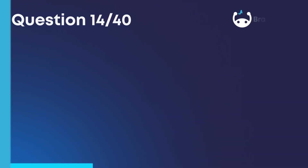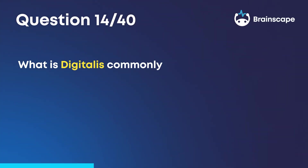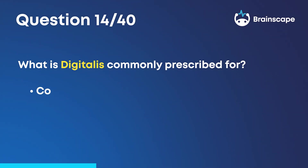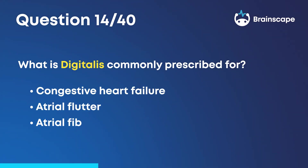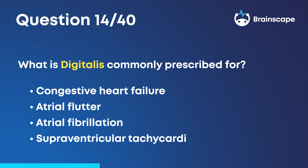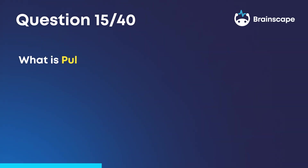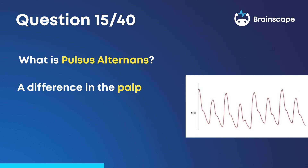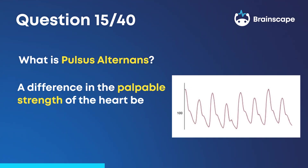Question 14: What is digitalis commonly prescribed for? Digitalis is commonly prescribed for congestive heart failure, atrial flutter, atrial fibrillation, and supraventricular tachycardia. Question 15: What is pulsus alternans? A difference in the palpable strength of the heartbeats.